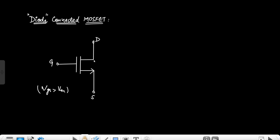That's why gate and source can't be short circuited. The drain and source also can't be short circuited because if they are, there won't be any current flowing in the MOSFET. So the only possibility left is short circuiting the gate and drain terminal. This makes it a two-terminal device — this is the diode connection.